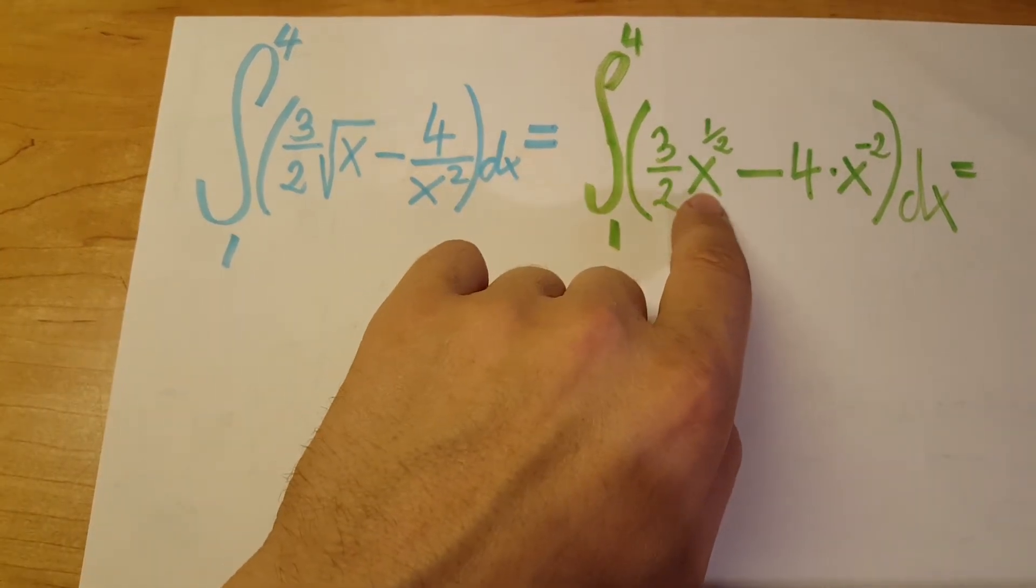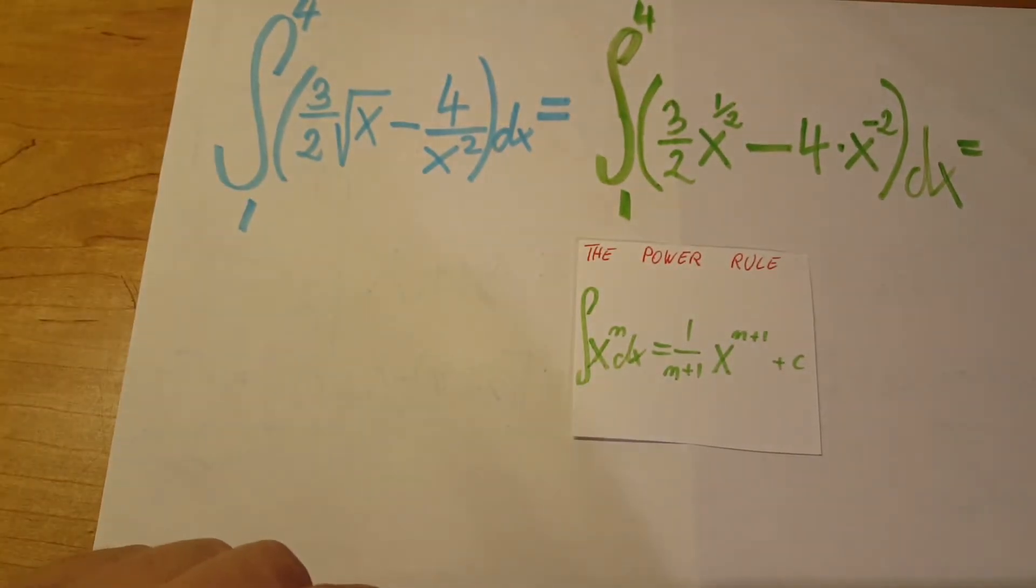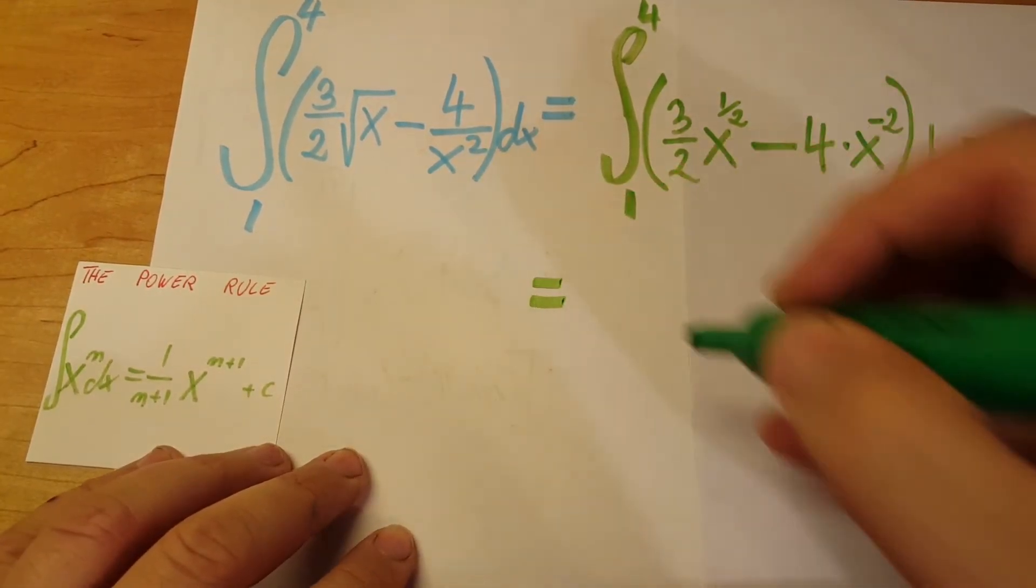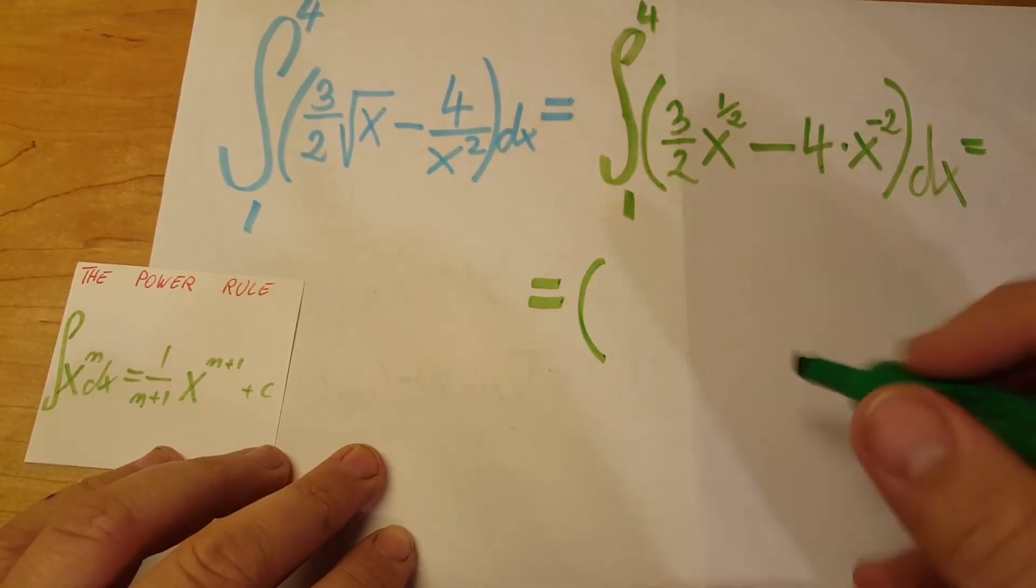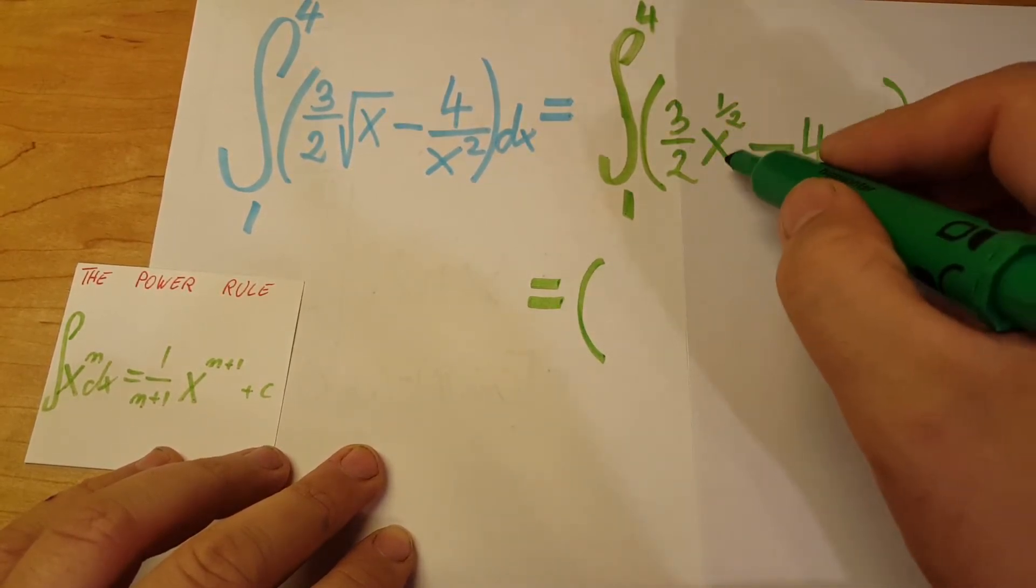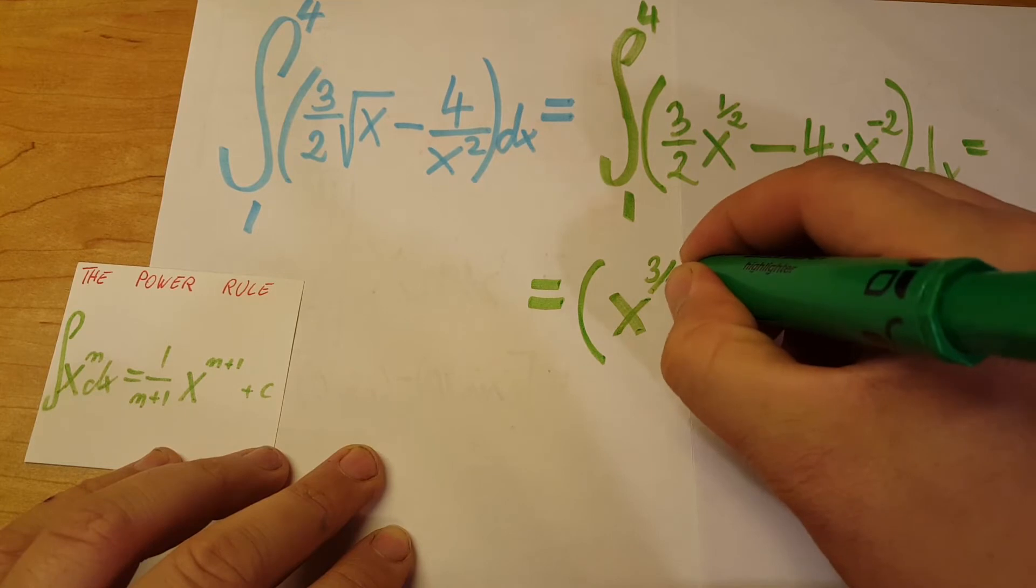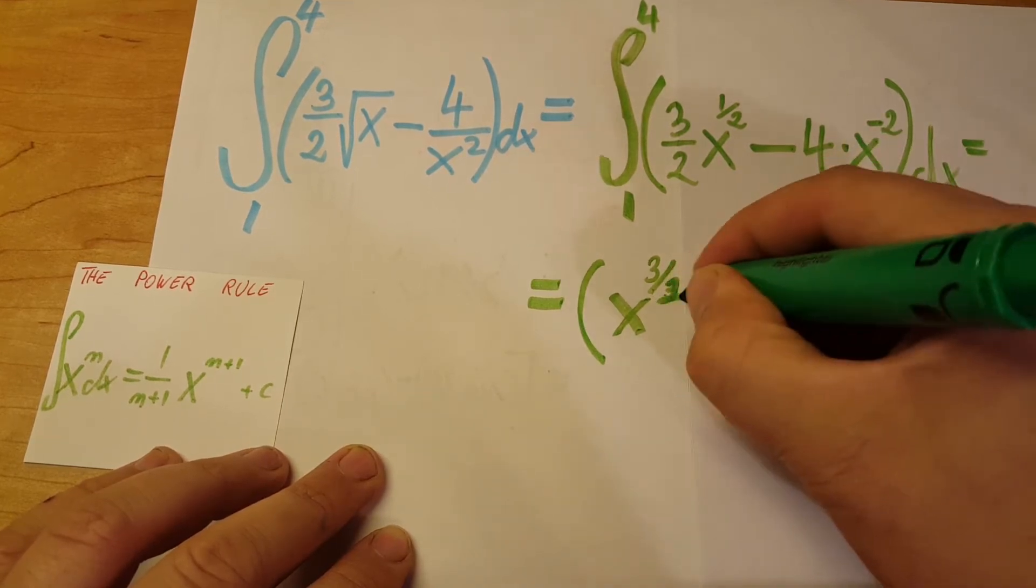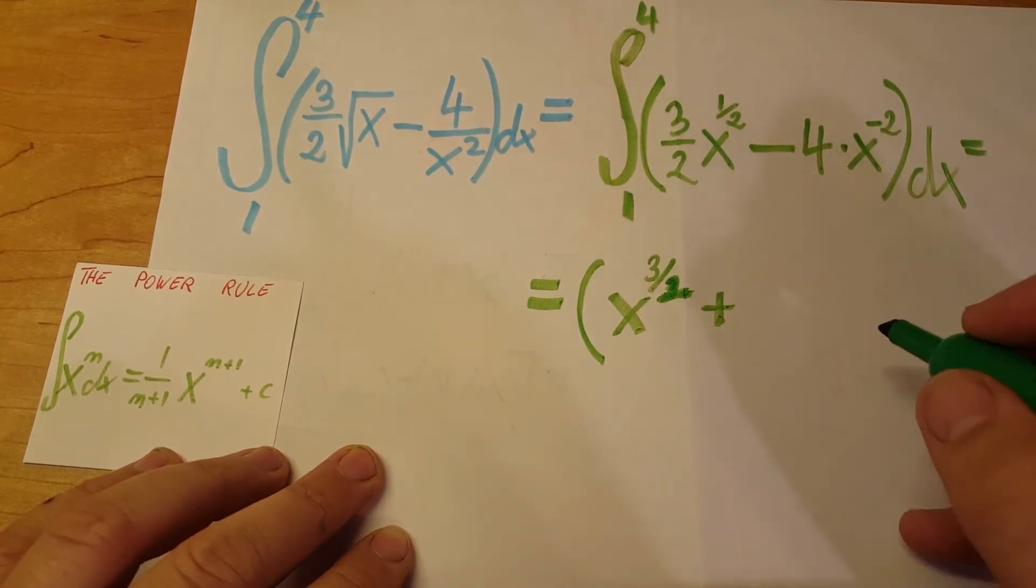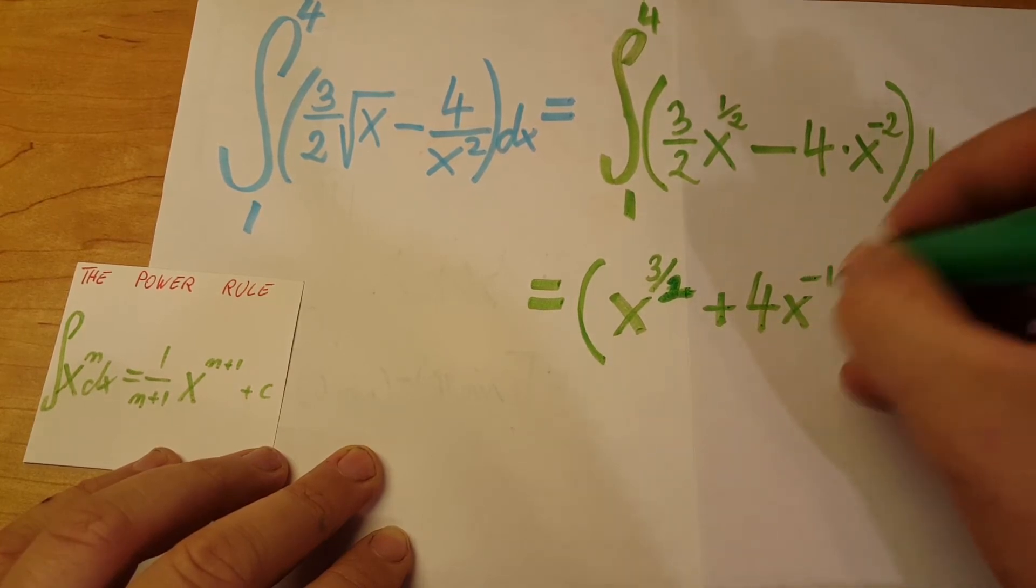And now we can see easier that the simple power rule will be just fine. So let's solve it. The first term integral of 3 half times x to the 1 half will turn into x to the 3 half. 3 over 2 plus 4x to the negative first.